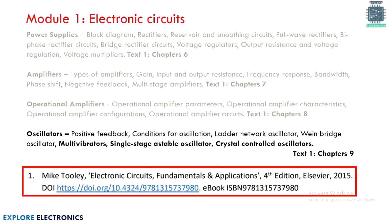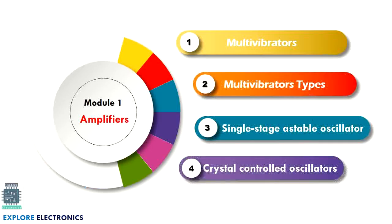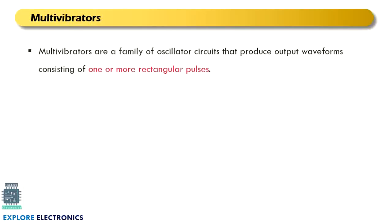Welcome to this video. Let us see the multivibrators, multivibrator types, single stage astable oscillator, and crystal oscillator. First, a multivibrator is a kind of oscillator circuit which produces rectangular pulses, or we say a square wave is the output of the multivibrator.